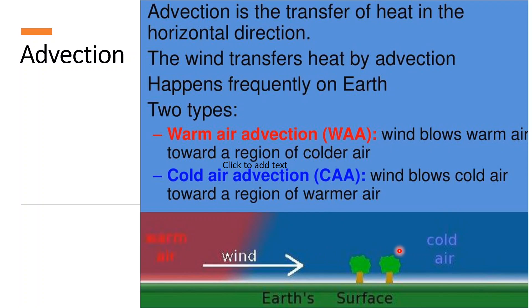A cold air, when it moves towards a warm area, can also lead to the cooling of the area. So, warm air advection and cold air advection occurs above the surface of the earth.